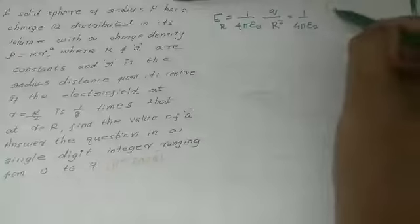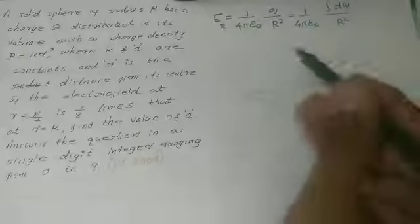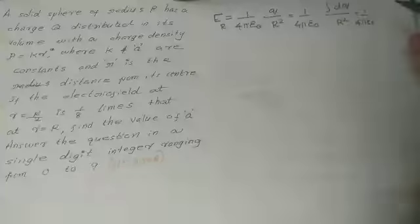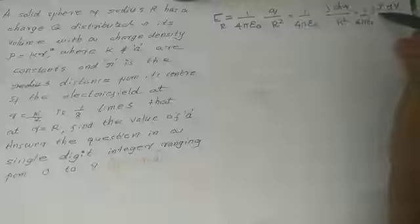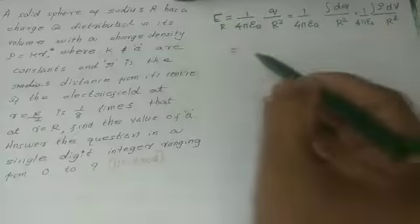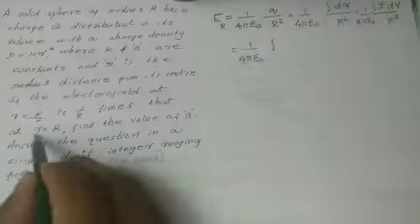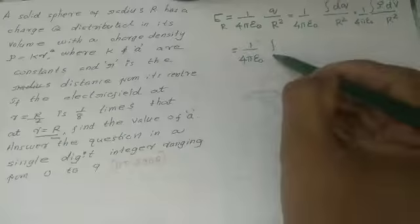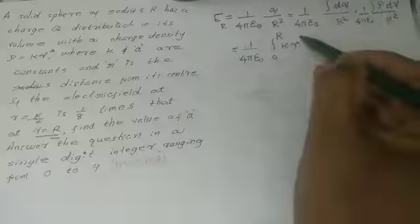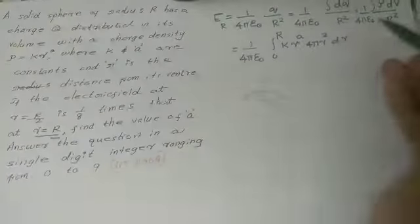It can be written as 1 by 4 pi epsilon 0 integral rho dV divided by r squared. Since integral dq equals Q, this becomes 1 by 4 pi epsilon 0 integral from 0 to capital R of k r to the power a times 4 pi r squared dr.